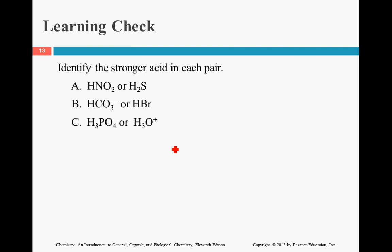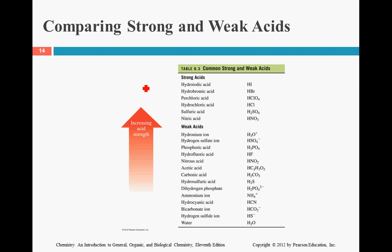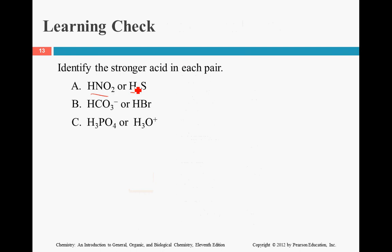So if we're going to look at the differences in the strong and weak, so we're looking at HNO2 versus H2S. HNO2 is right here. H2S is right here. NO2 is higher on the chart. That means it's a stronger acid. That means this is a stronger acid.